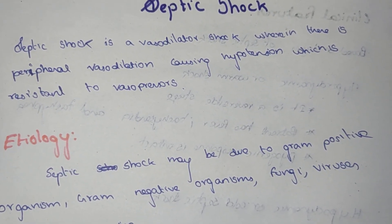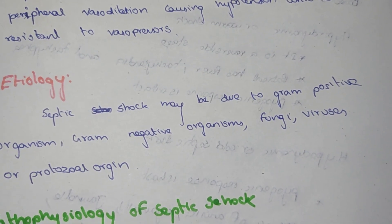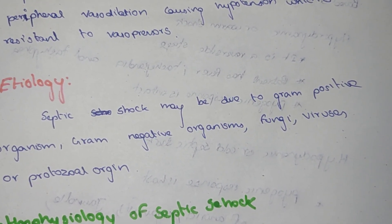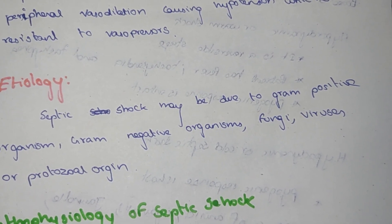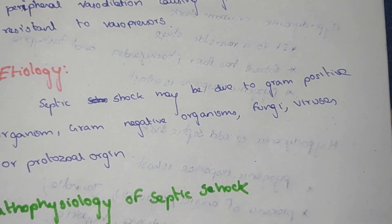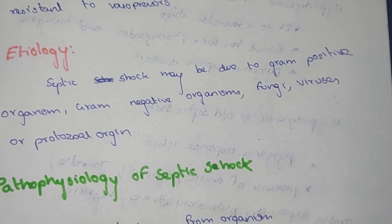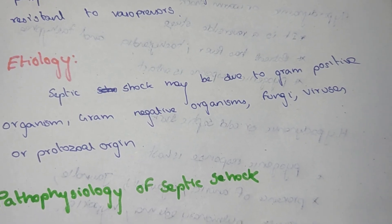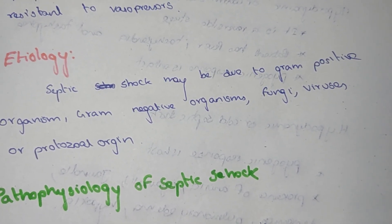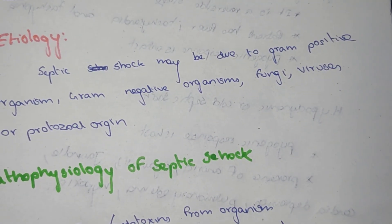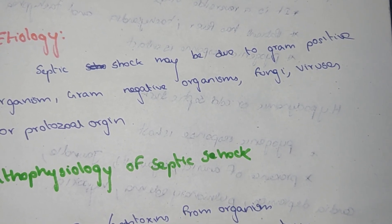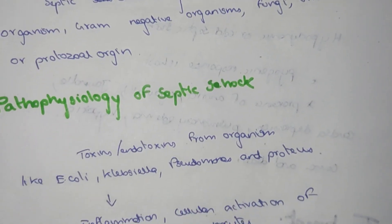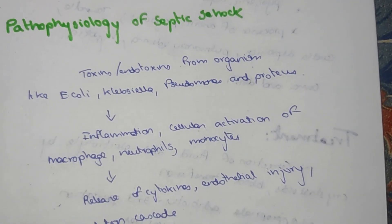The etiology of septic shock may be due to gram-positive organisms, gram-negative organisms, fungi, viruses, or protozoan origin.